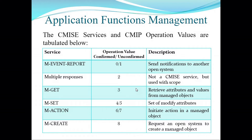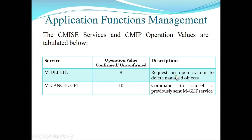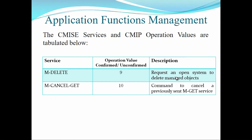The CMISE service and CMIP operation values are tabulated. M-GET operation value 2 is not a CMISE service but used with scope; M-GET 3 retrieves attributes and values from a management object. M-SET 4 or 5 sets or modifies attributes. M-ACTION 6 or 7 initiates an action in a management object. M-CREATE 8 requests an open system to create a management object. M-DELETE operation value 9 requests an open system to delete a management object. M-CANCEL-GET operation value 10 is a command to cancel a previously sent M-GET service.